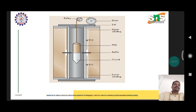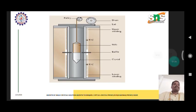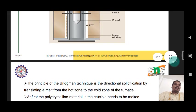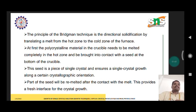In this structure, we can identify the drum and lid, the upper winding places, the melt region, the crystal growth zone, the higher and lower temperature zones, and the upper and lower winding places. Using this technique, single crystal structures can be obtained.